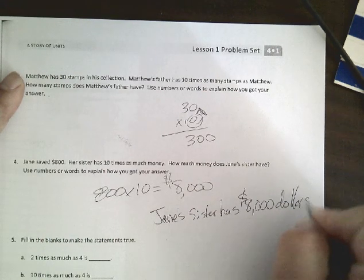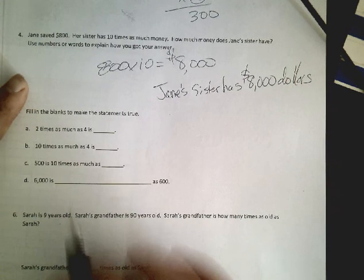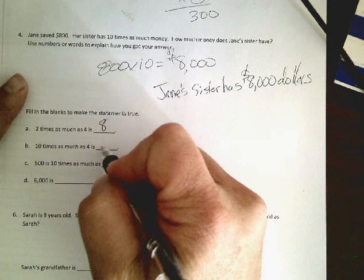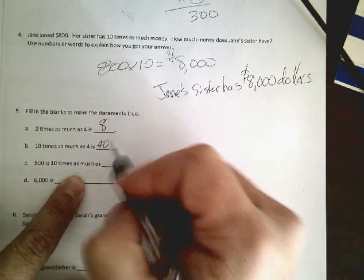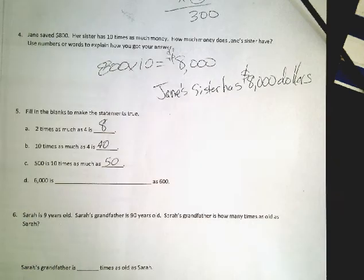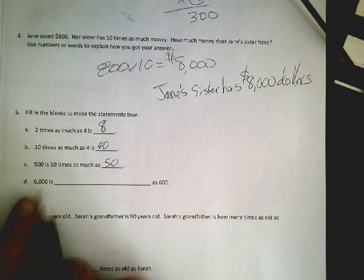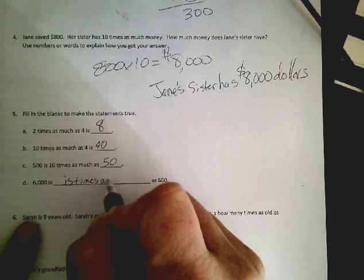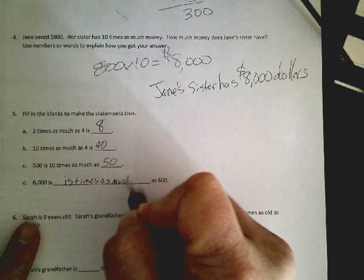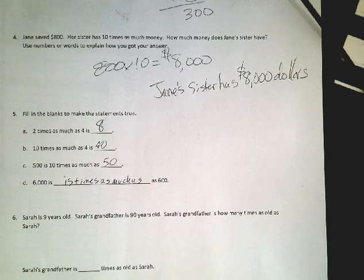Fill in the blank. 4 times as many as 4 is 8. 10 times as much as 4 is 40. 500 is 10 times as much as 50 because 50 times 10 is 500. 6,000 is 10 times as much as 600.